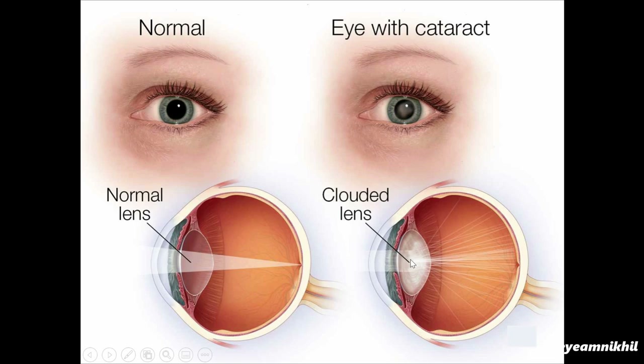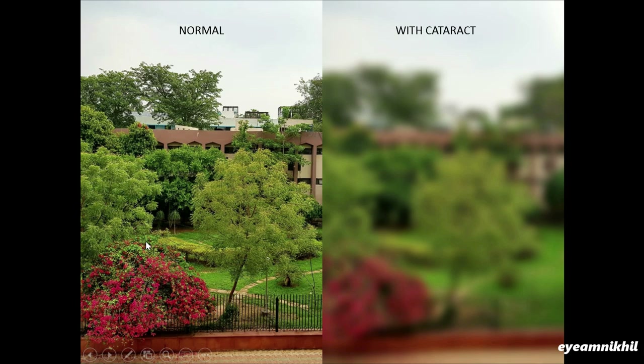Knowing these hard and soft parts is very important in understanding the logic behind the steps of cataract surgery. When this clear lens becomes opacified it is known as cataract, which causes decrease of vision. Here is an example comparing the vision of a person with a clear lens with that of a person with cataract.